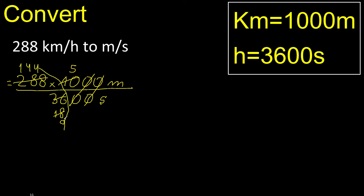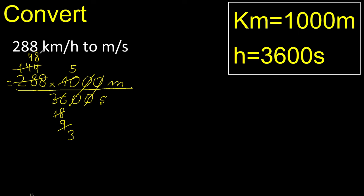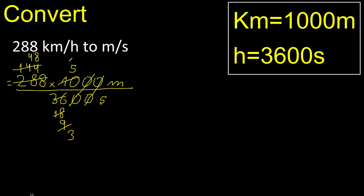This can be divided by 3. Divided by 3 is 3. Divided by 3 is 48. 48 can be divided by 3 — 48 divided by 3 is 16. 16 multiplied by 5 is 80.